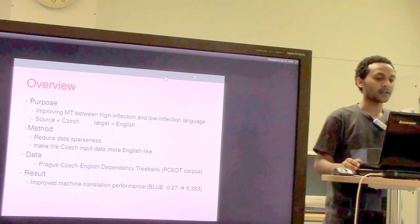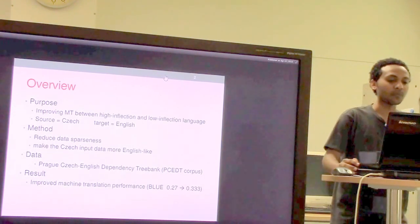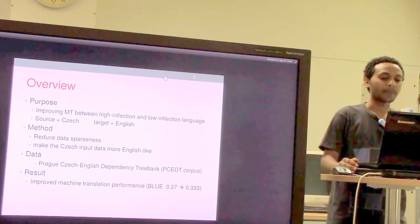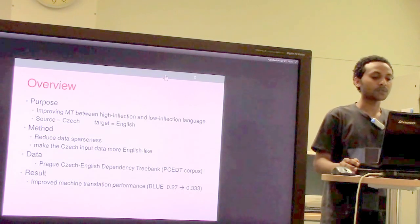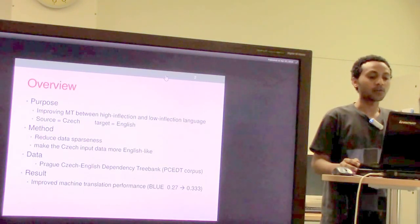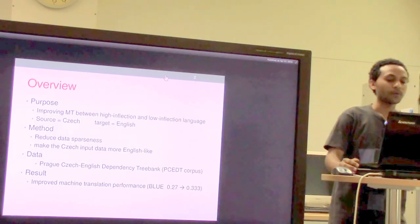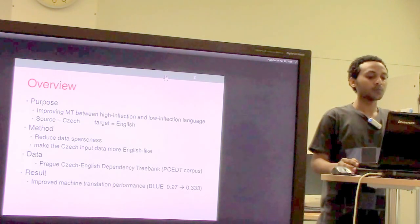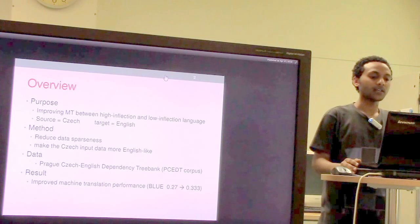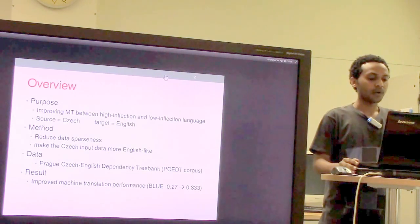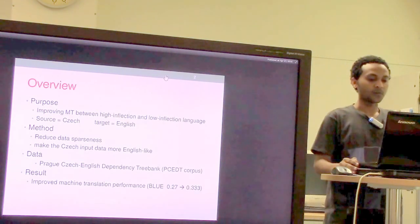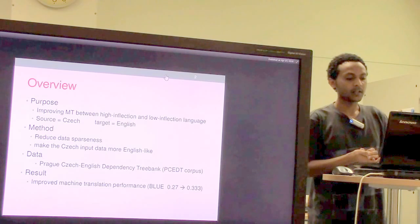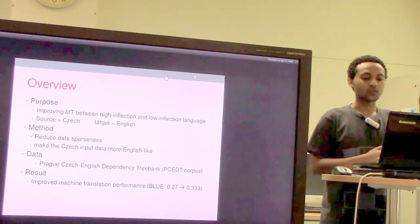We'll start off with the overview. The main purpose of this paper is to improve machine translation between two morphologically different languages — specifically a high inflection language as source and a low inflection language as target. The two case languages are Czech and English. The method focuses on reducing data sparseness and making Czech more English-like in morphological structure, using the Prague Czech-English Dependency Treebank corpus. The BLEU score raised from 0.27 to 0.33.